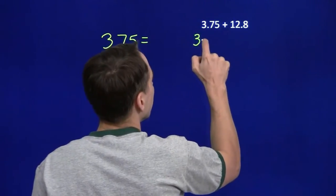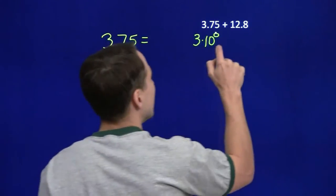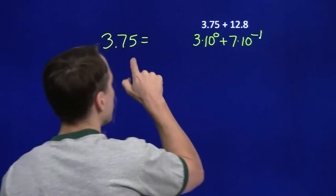the 3 is in the units place, that's 3 times 10 to the 0. The 7 is in the tenths place, that's 10 to the minus 1. So that's 7 times 10 to the minus 1.